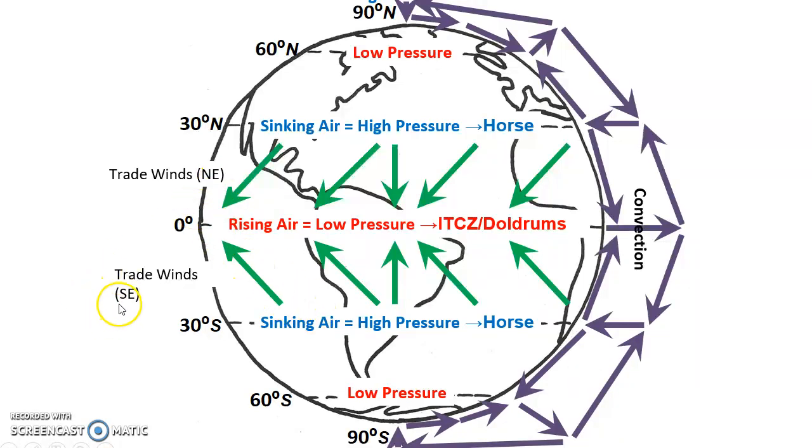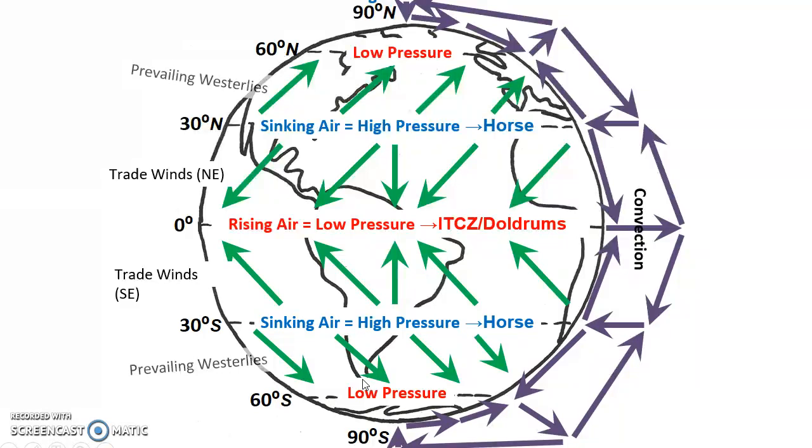And then we do the same thing for the next wind belt. It goes high to low with a little spin. And you can see it's coming from the west. So we call it the prevailing westerlies. And finally, at the poles, again, high to low, little spin. And that makes the wind come from the east to the west, giving us the polar easterlies.